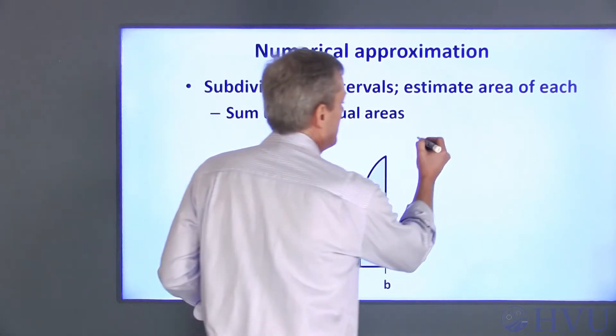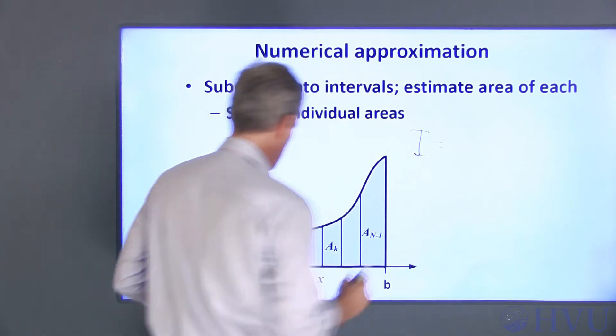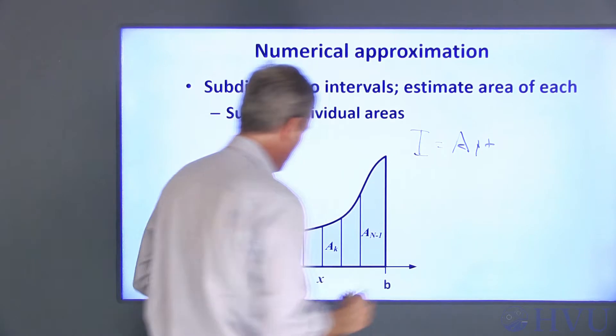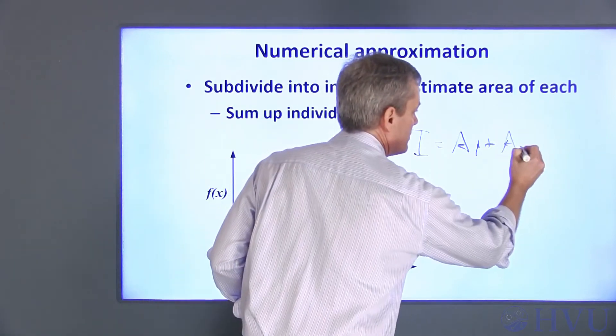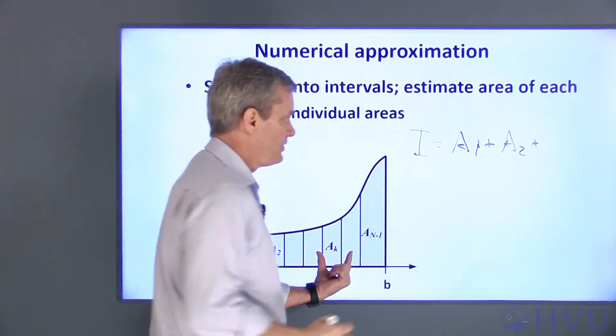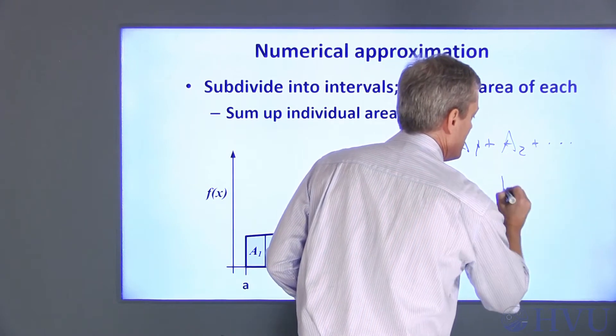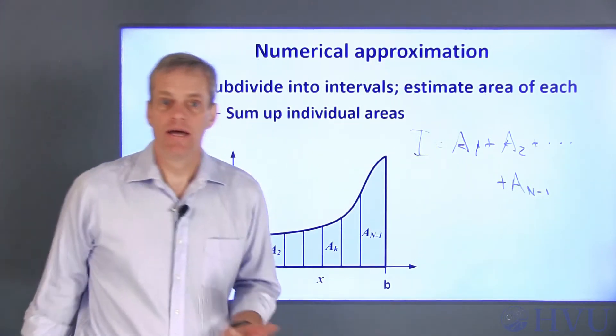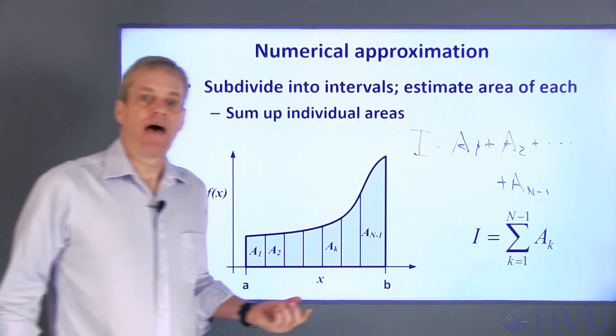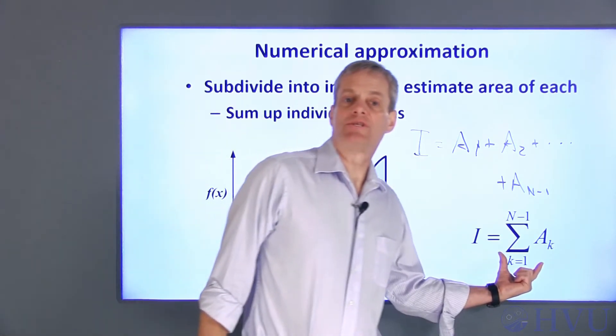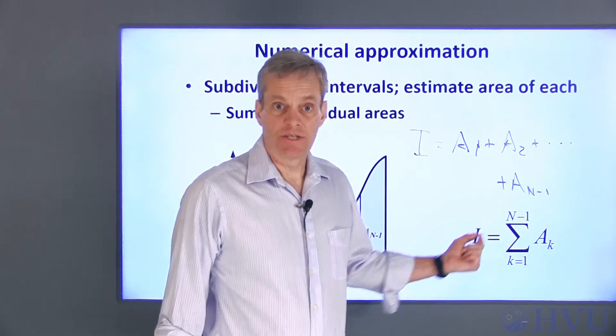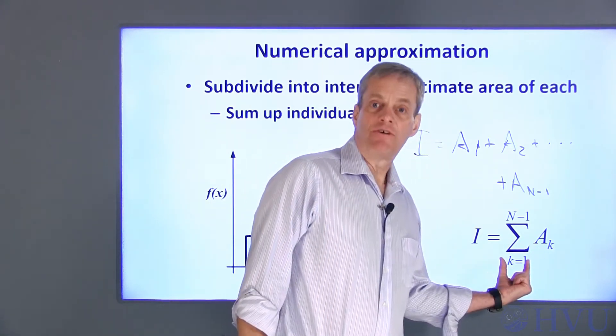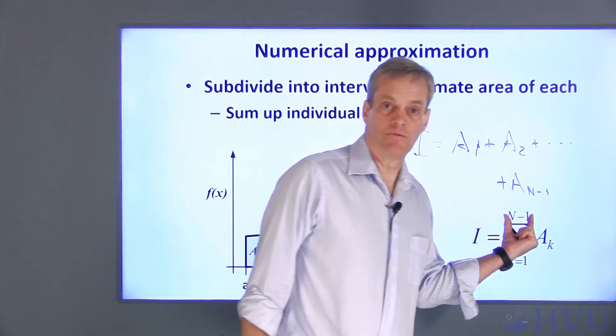So the integral, I'll call it i, is a1 plus a2 plus a bunch of other little areas up to a sub n minus 1. More compact mathematical notation uses the summation sign. This indicates summation of all the areas, a sub k, for every value of k from 1 to n-1.